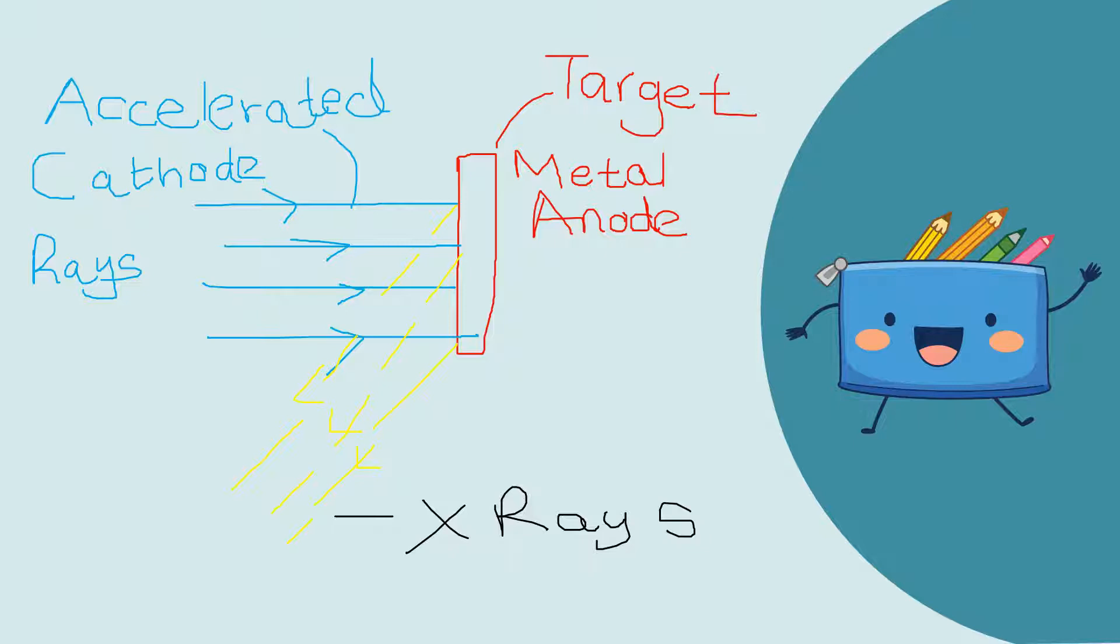As mentioned in this diagram, whenever an accelerated cathode ray comes in contact with a metal anode, they reflect back, but when they reflect back, they are not the same cathode ray anymore. Instead, a new form of radiation known as the X-rays are formed. This was an unknown type of radiation, therefore the name X-rays was given, because we used X as a common letter for unknown terms in algebra.